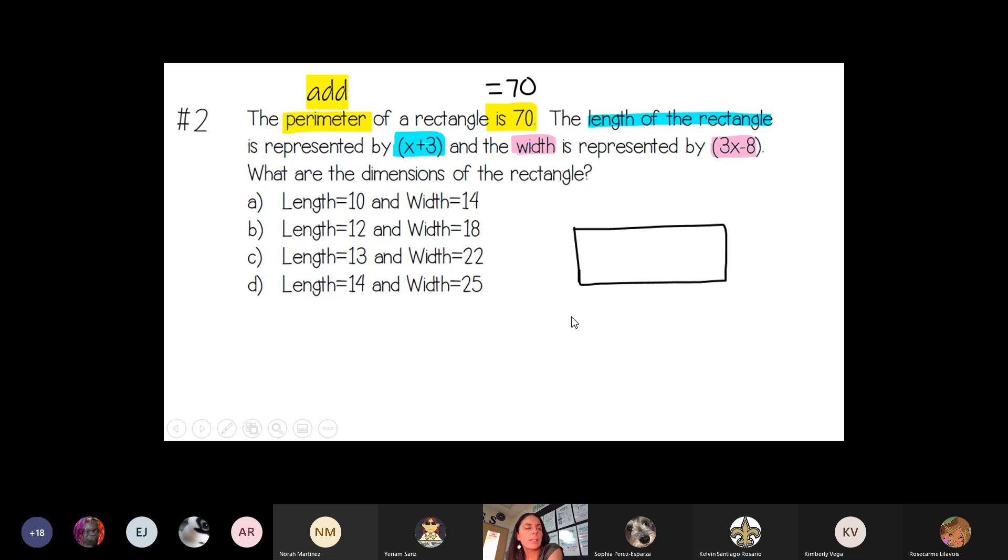So I drew a rectangle and I'm going to include the length and the width. So I have x plus 3 as my length, 3x minus 8 as my width. And now I need to add them all together and set it equal to 70 because that's the perimeter. When I think of perimeter, that means I'm adding each side together.